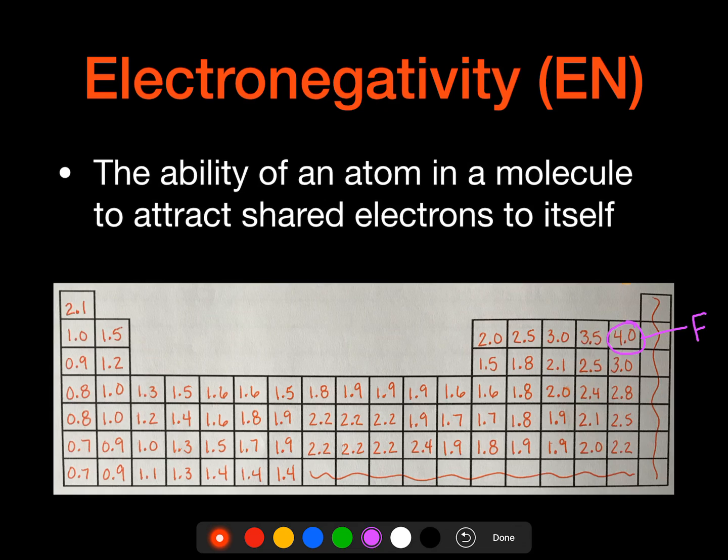And then our lowest values are over in the other corner. So this one right here, and actually there's a couple of them down in that corner, is going to be francium. And cesium is just above there. So our overall trend then is that we're going to increase from bottom to top in a group, and then from left to right across a period.